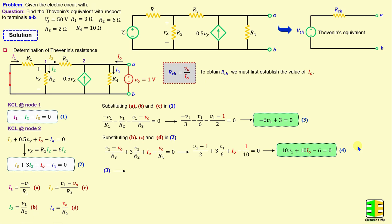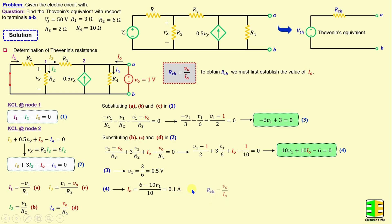From equation 3, V1 equals 3 over 6 equals 0.5 volt. From equation 4, IO equals (6 minus 10 times V1) over 10, and if we replace V1 with 0.5, we get IO equals 0.1 amps. Now we can calculate RTH equals V0 over IO, and replacing with their numerical values, we obtain finally RTH equals 10 ohms.